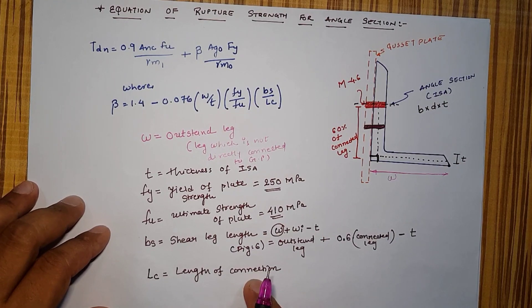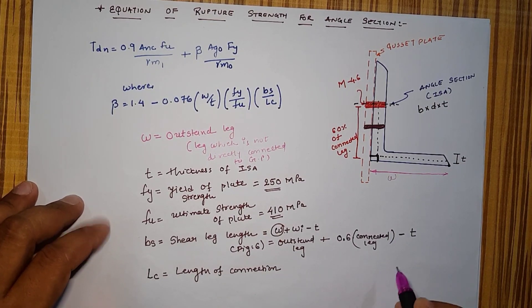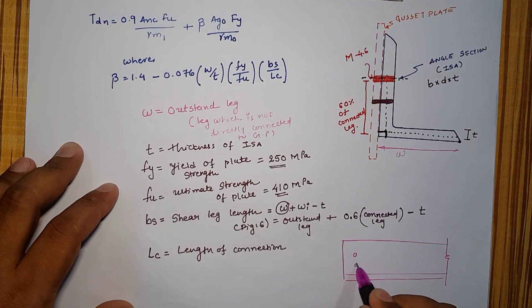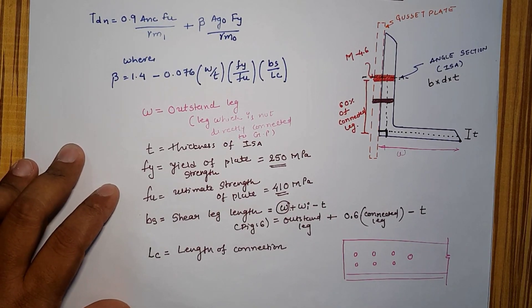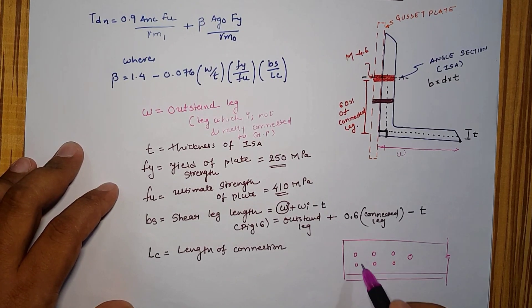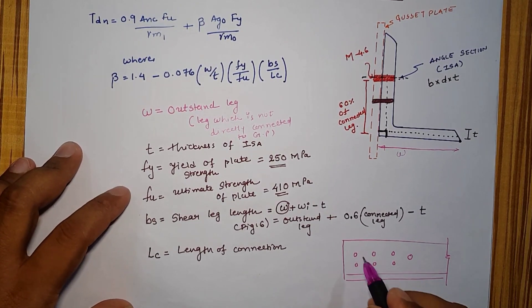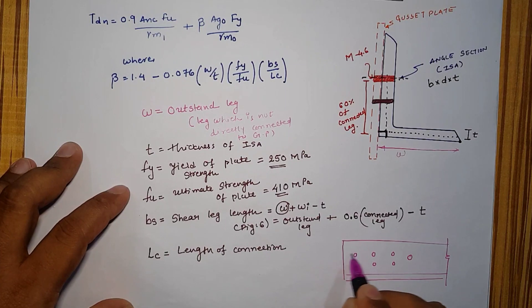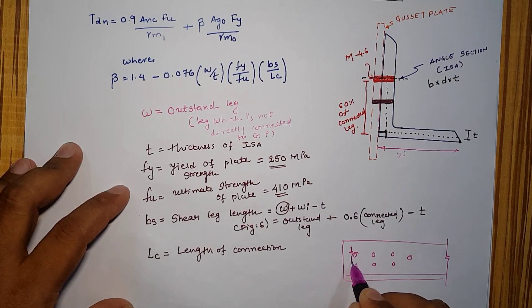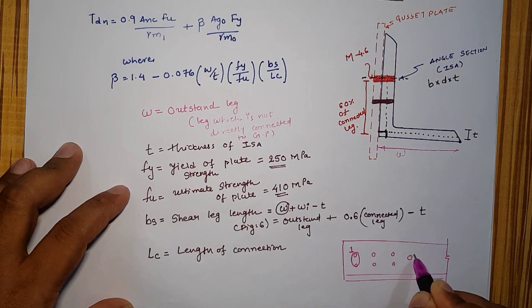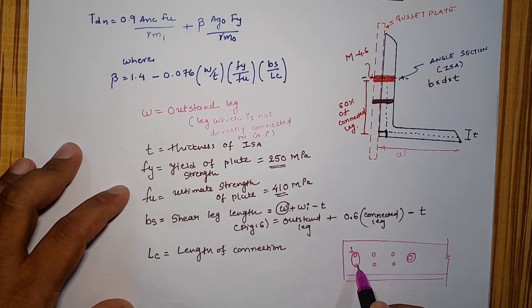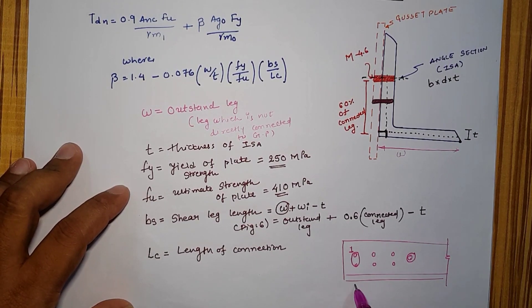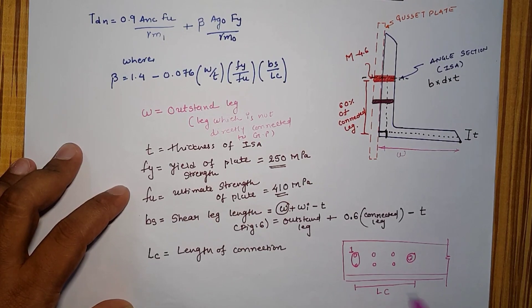Last part is LC, length of connection, means in the side view of the drawing if numbers of bolt is provided, 7 numbers of bolt in 2 lines of row, the distance of left hand side outermost bolt to the most right hand side bolt is known as length of connection.